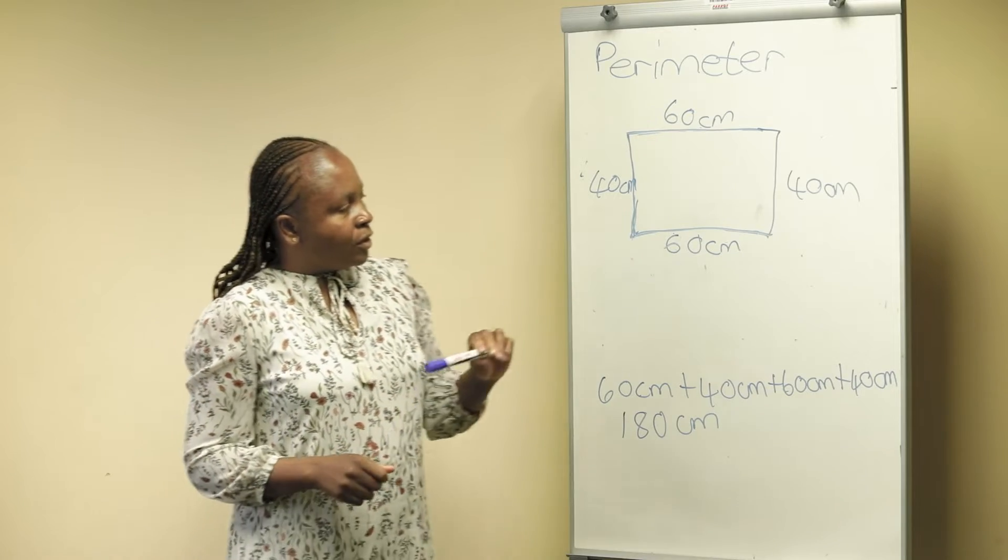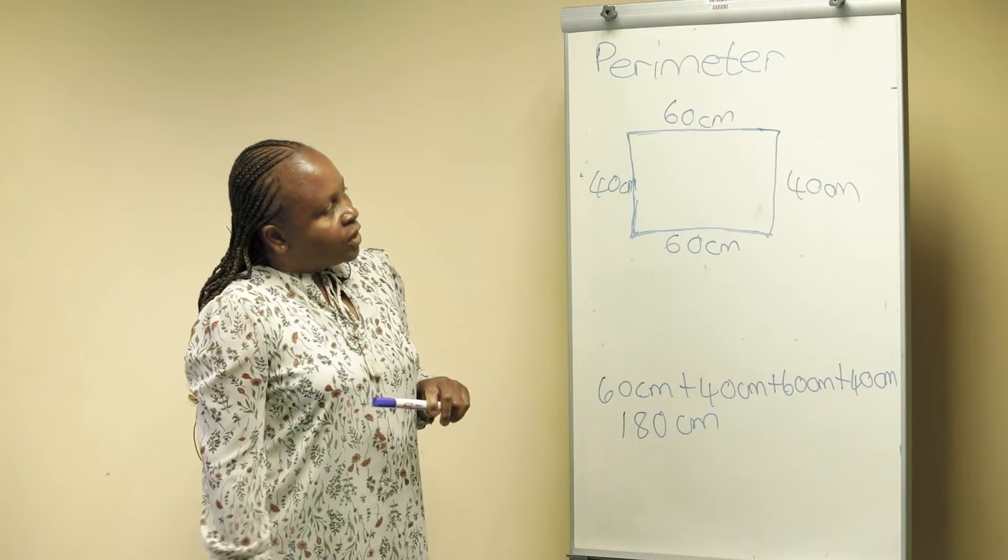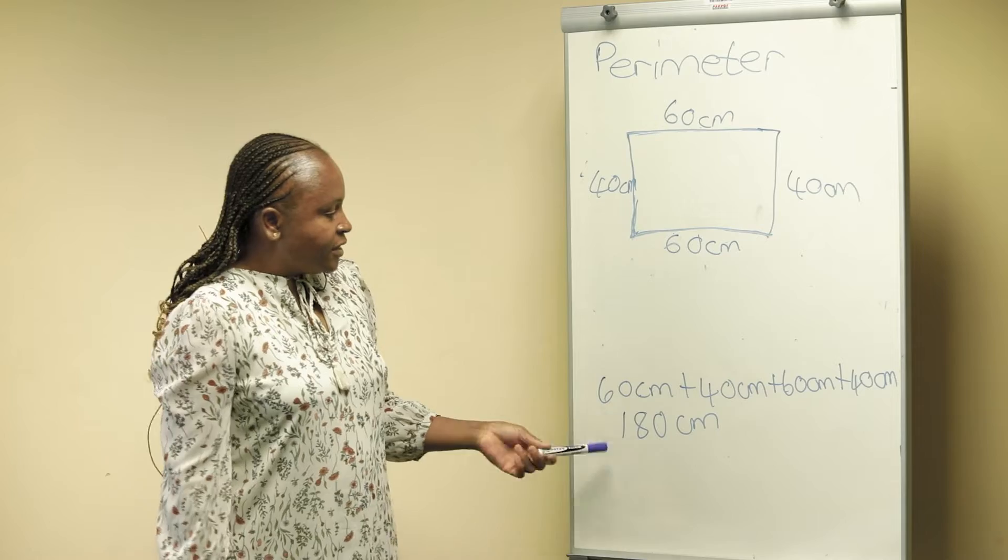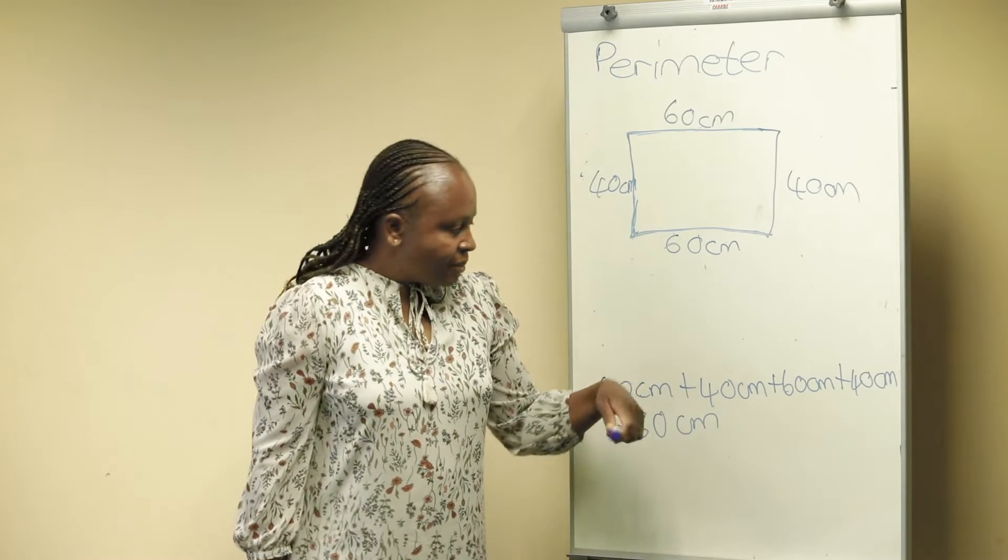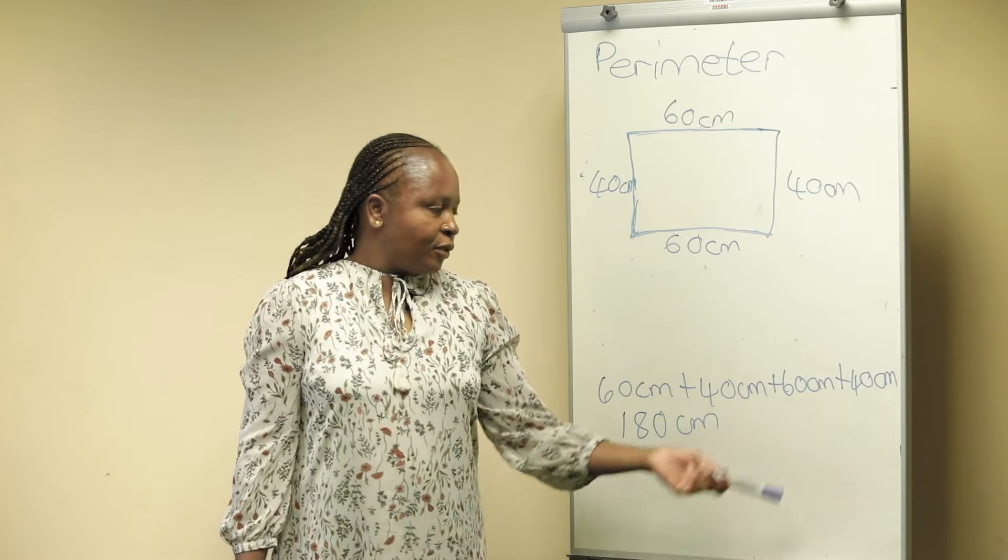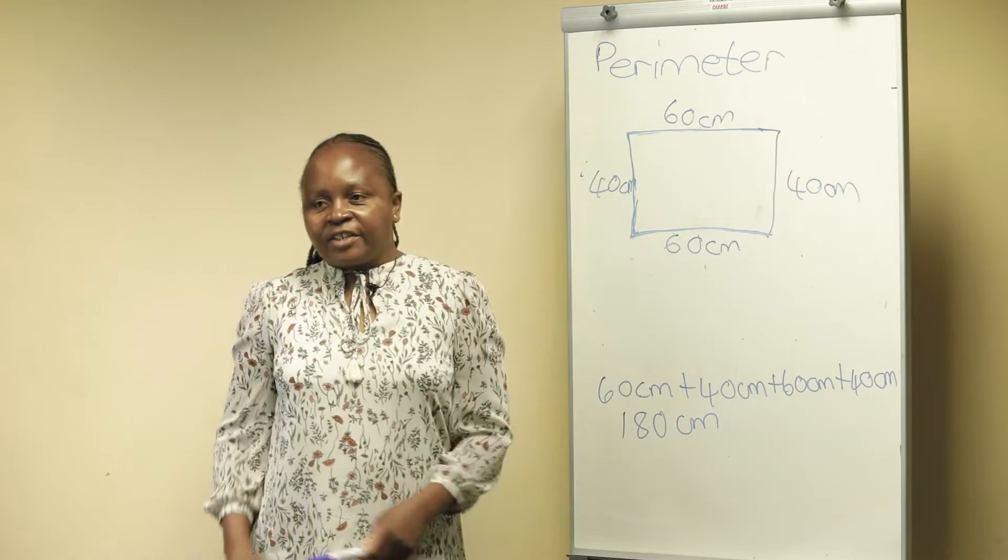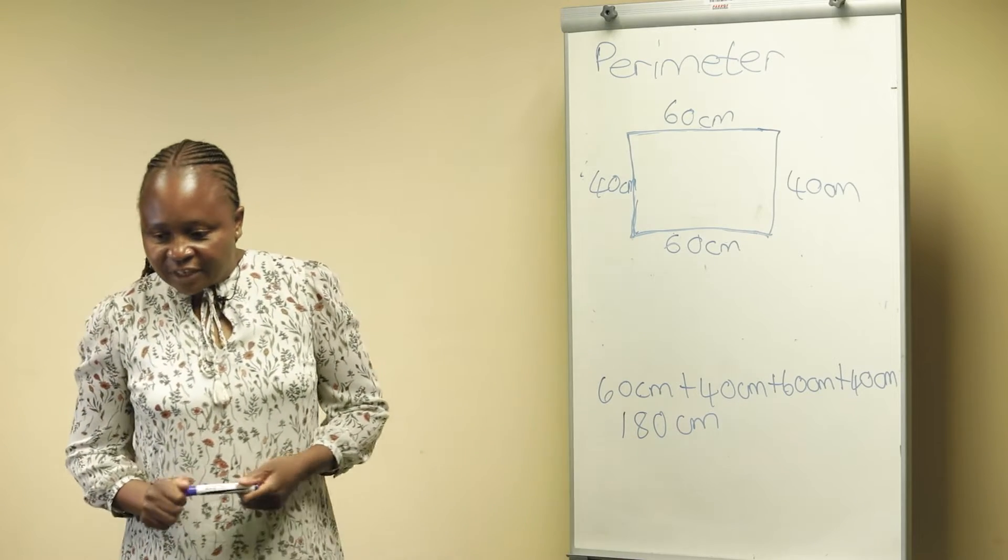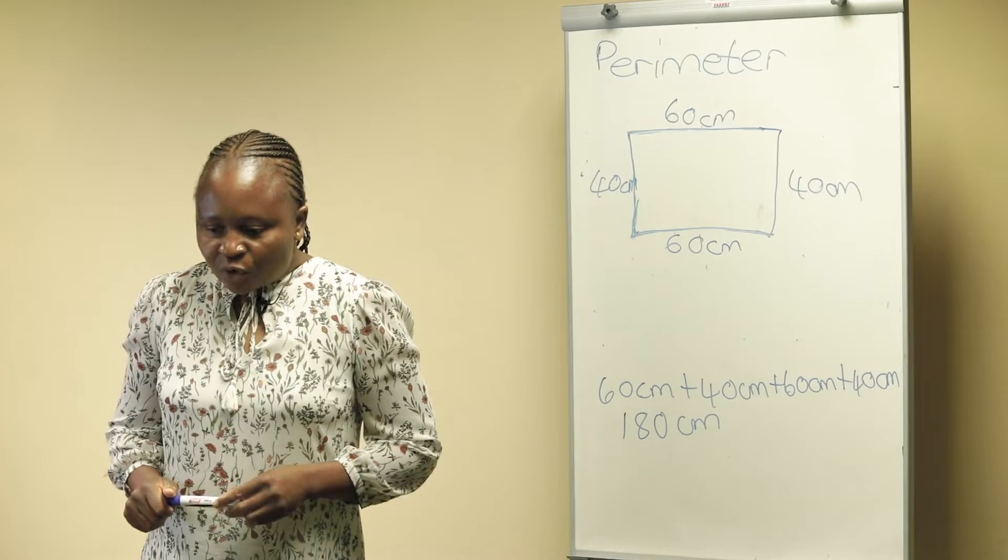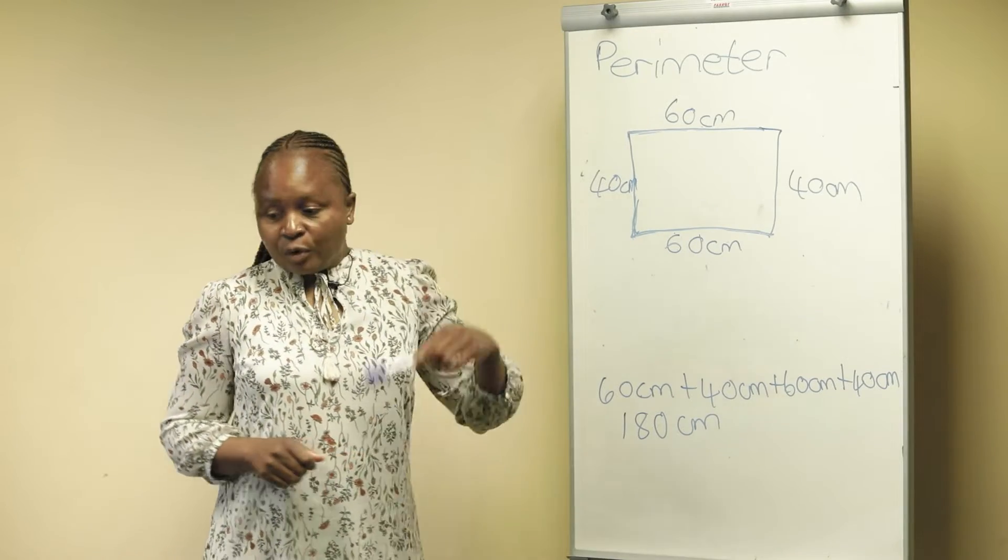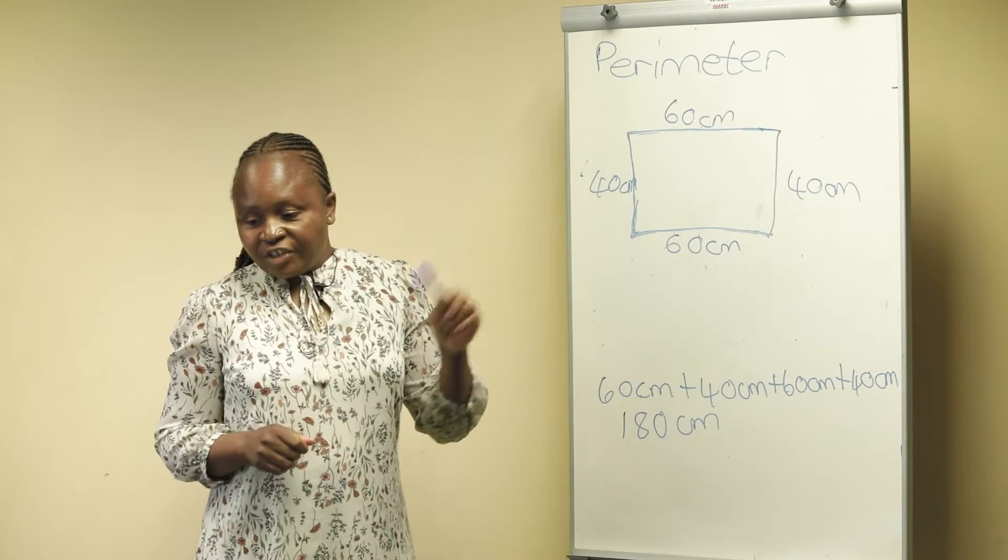We have a rectangle here, so when we add we are saying 60 centimeters plus 40 centimeters plus 60 centimeters plus 40 centimeters, which gives us 180 centimeters. So that's summing up or adding up right round the shape.